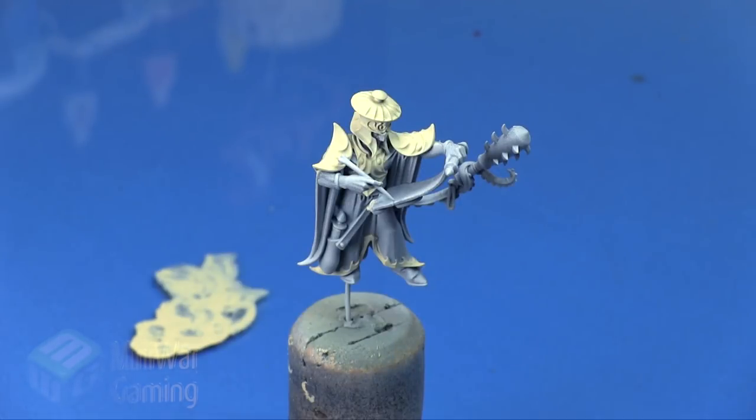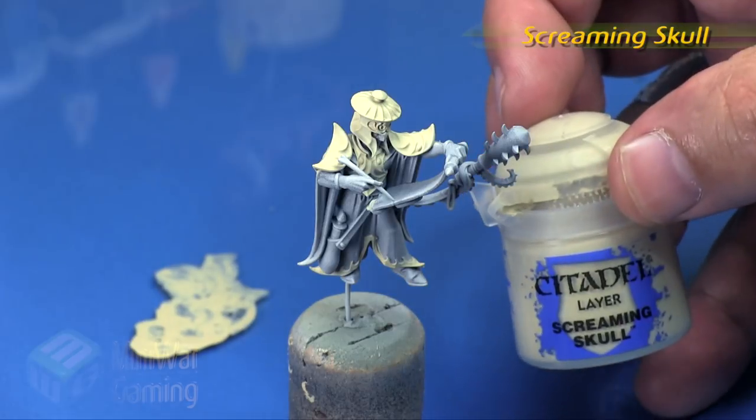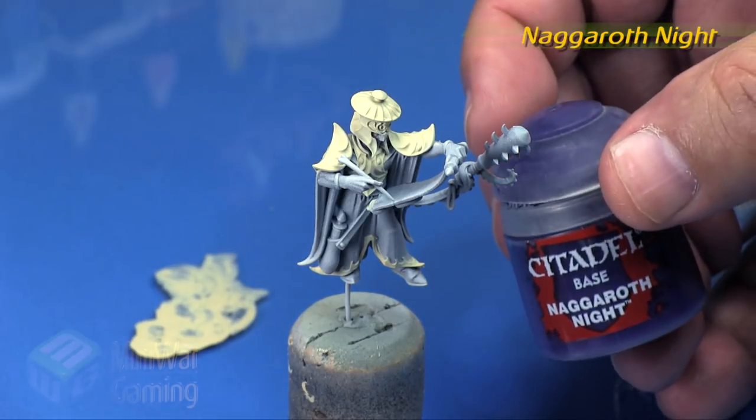Really quickly we're just going to slap that onto the armor. Two coats is all that's necessary. Screaming Skull and Nagroth Knight.